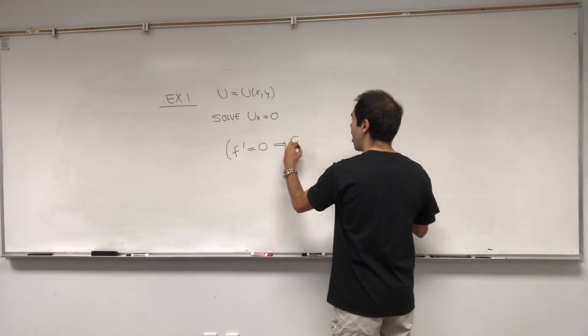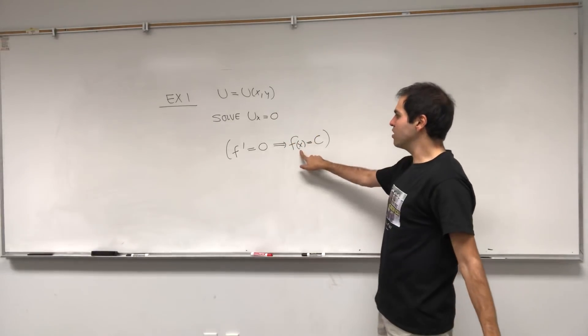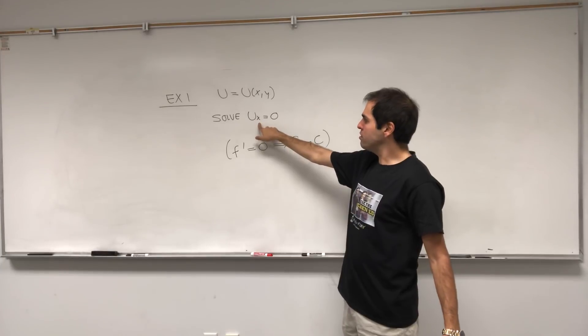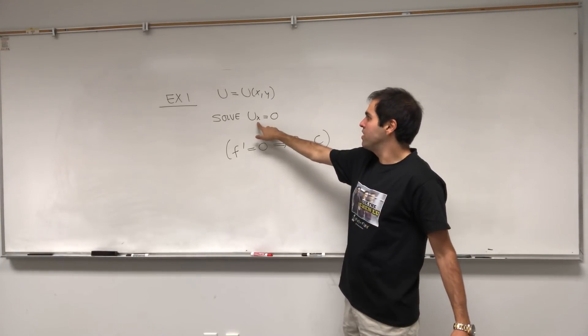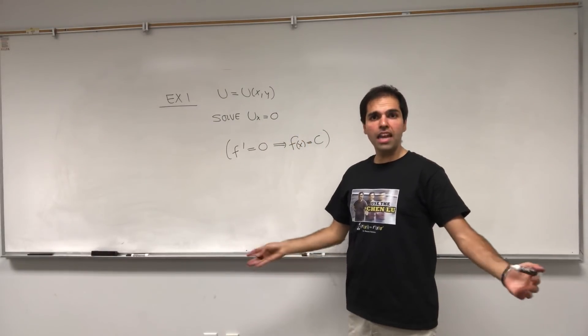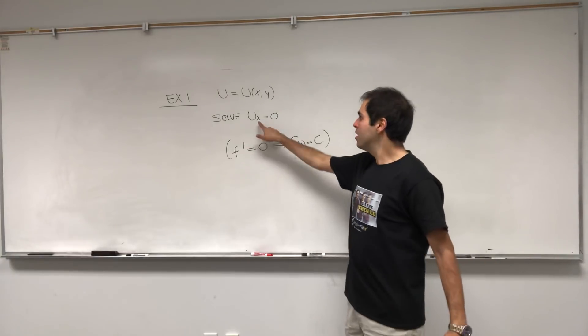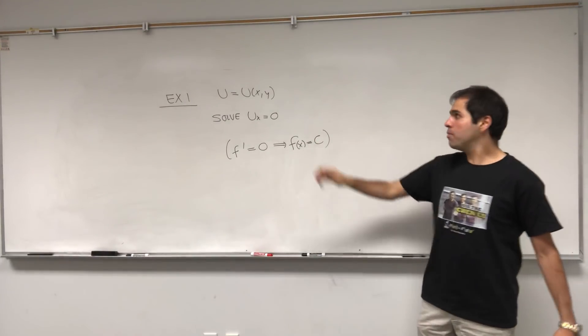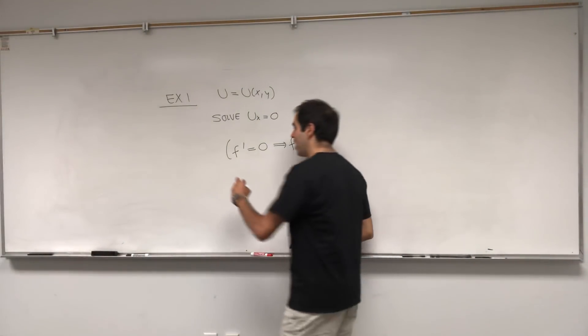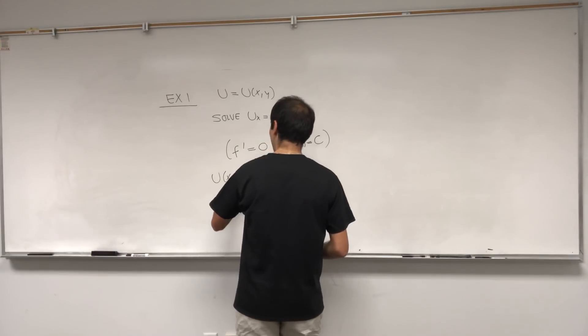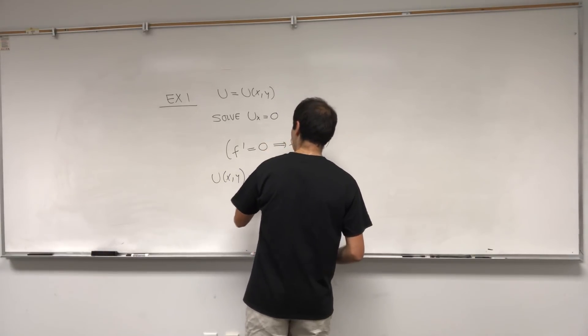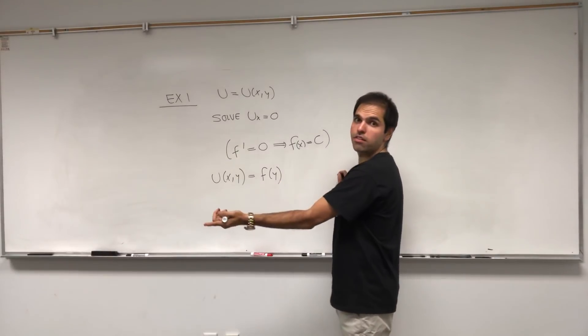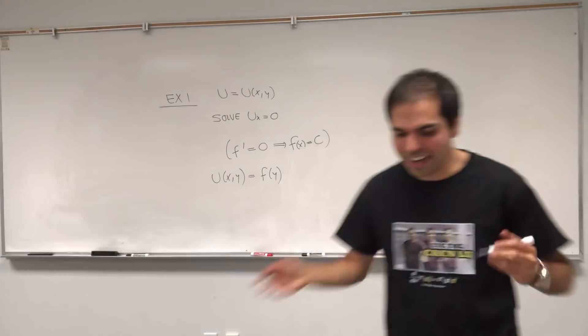But what does this constant mean? It means it doesn't depend on the variable of differentiation. So here if you want to figure out which functions have the property that the x derivative is zero, well think about this: any function that just depends on y has that property, because what this says is it doesn't depend on x. So it's constant with respect to x. In particular, since it doesn't depend on x, it must depend on y. So the general solution is in fact u(x,y) equals, let's say, f of y, where f is any function of y. And in fact, if you differentiate this with respect to x, you get zero. So this works, and vice versa by integration.